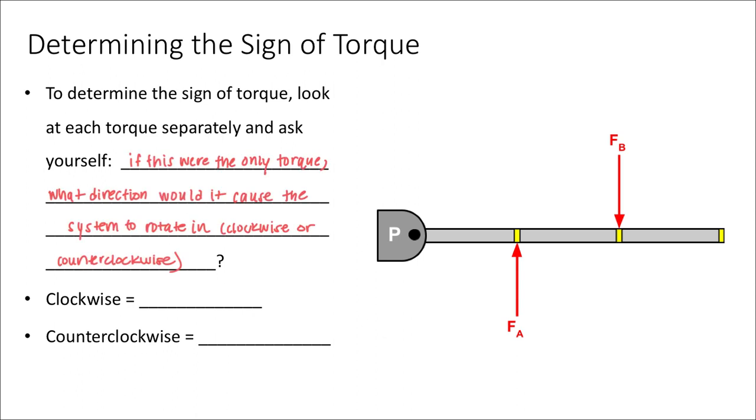As a reminder, we define universally clockwise motion, in the direction of a clock, to be negative. And we define counterclockwise motion, in the opposite direction of a clock, to be positive.